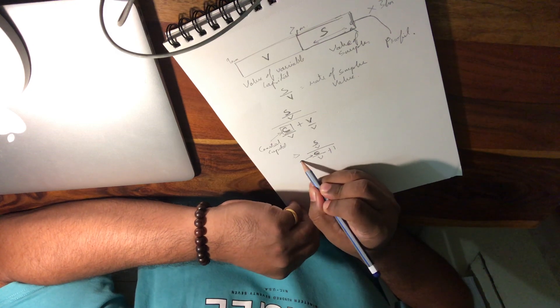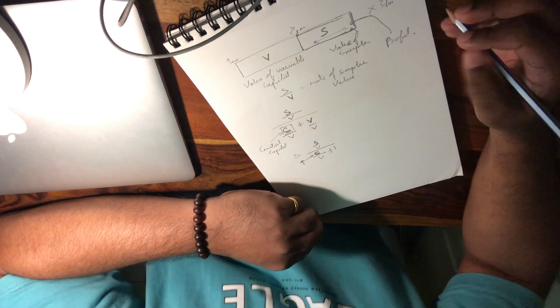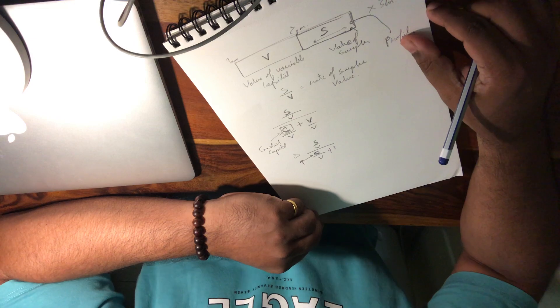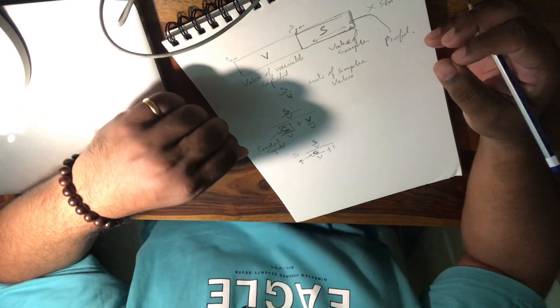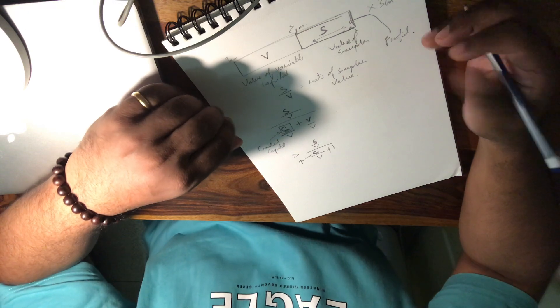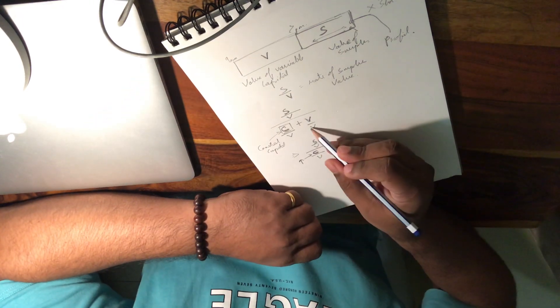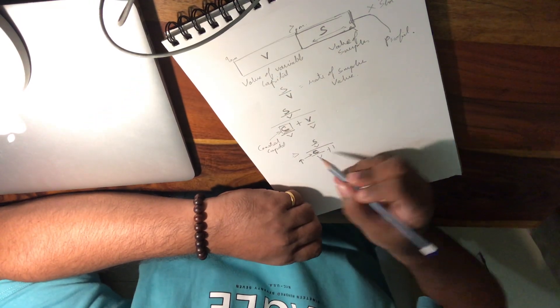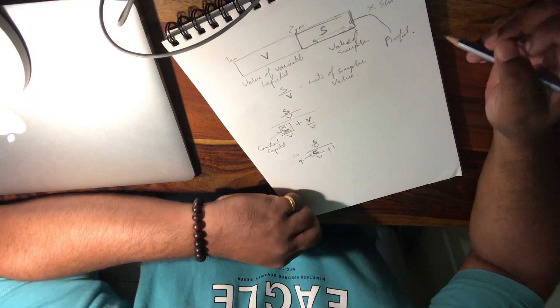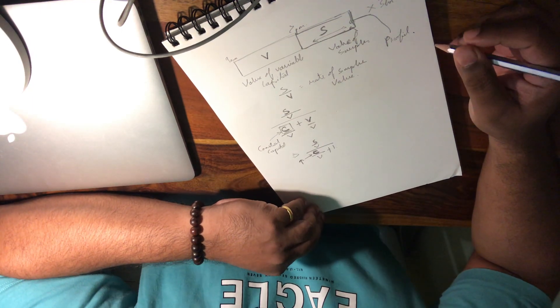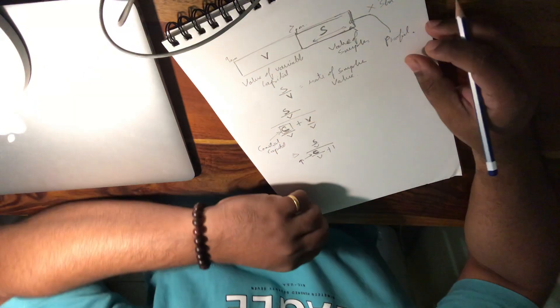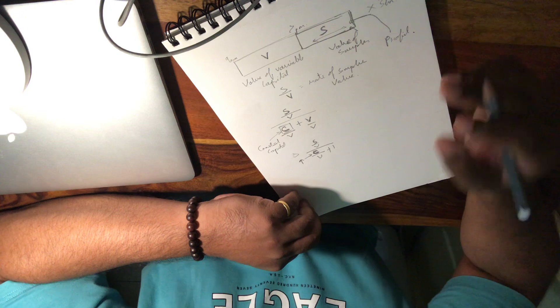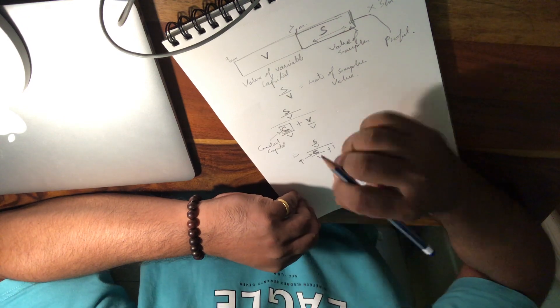So this value of C essentially goes up. With more technology coming into the picture, with the advances in the industrial revolution, the value of V essentially is going down, whereas the value of C, which is your constant capital, is going up. So in any processing industry today, if you go, you will have less labor and more machinery. Work is being done by the press of a button, and that's essentially where the issue is.